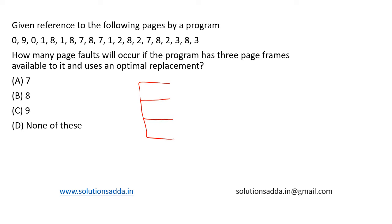When we call zero, it is not available in memory so it causes a page fault. Zero gets inserted. When we call nine, it again causes a page fault, so nine gets inserted. Zero is a hit as it is already in memory. One is again a miss, so one is kept here.